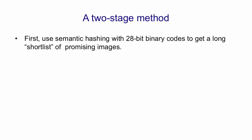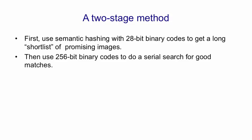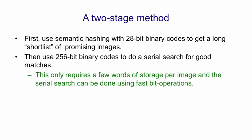that's much easier to store and much faster to match. Even faster is to use a two-stage method. So first we extract a short binary code of about 30 bits, and that short binary code is used with semantic hashing to very rapidly get us a shortlist of promising images. We simply take the short binary code and flip a few bits in it to get candidate images. The candidate images can then be matched using 256-bit binary codes that are stored with each known image to search for much better matches than can be found with a 28-bit binary code.